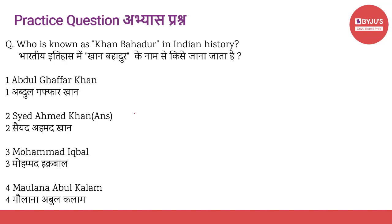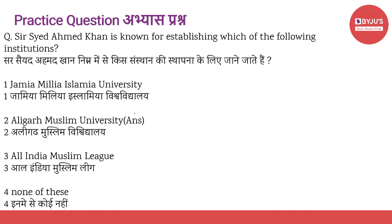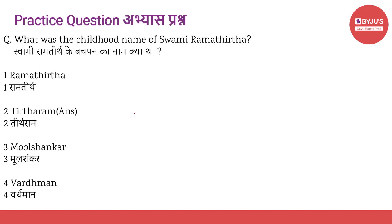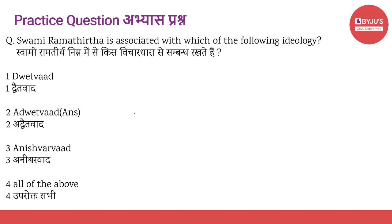Agla sawaal hamaara hai: Sir Sayyad Ahmed Khan is known for establishing which of the following institutions? 1. Jamia Millia, 2. Aligarh Muslim University, 3. All India Muslim League, and 4. None of the above. Next question hai: what was the childhood name of Swami Ramteerth? A. Ramteerth, B. Teerat Ram, C. Mool Shankar, D. Varthaman. Next question hai: Swami Ramteerth is associated with which of the following ideology? A. Dvaitavad, B. Advaitavad, C. Anishwarvaad, and D. All of the above.